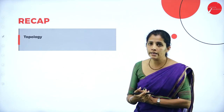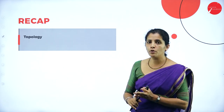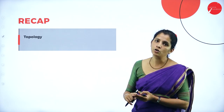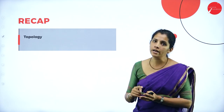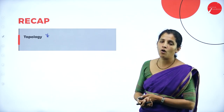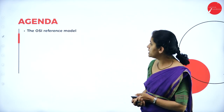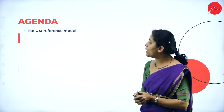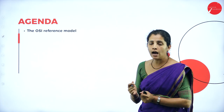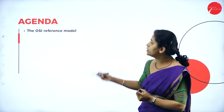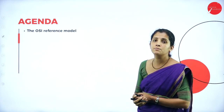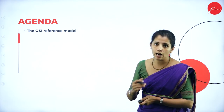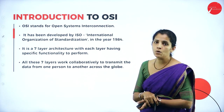We discussed six different types of topology: ring topology, bus topology, mesh topology, star topology, hybrid topology, and tree topology. This is a very important topic from the examination point of view. In today's session I am going to deal with the OSI reference model, along with its features and use in data communication.